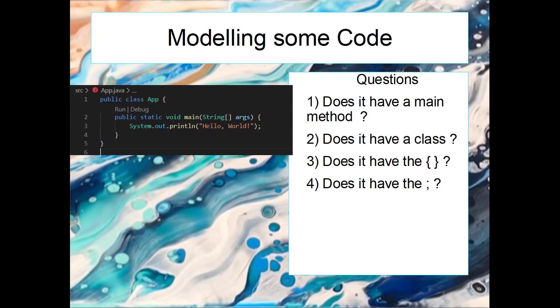Okay, so let's model the code first. So remember, we have four things that we need to remember when looking at Java code and the main method. So the first thing is, does it have a main method? Yes. So we know that when we execute this code, this is the first thing that will be executed. It's the starting point.